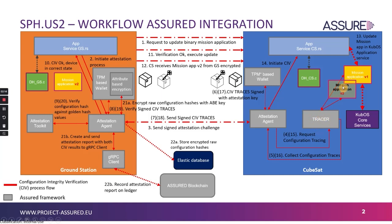The Tracer extracts the configuration hash from the first version of the mission application registered in the CubeSat, and sends the configuration traces back to the attestation agent. The attestation agent signs the CIV traces with the attestation key using the TPM-based wallet on the CubeSat, and sends the signed CIV traces back to the Ground Station. The attestation agent on the Ground Station then verifies the configuration hash against all hash values using the attestation key.